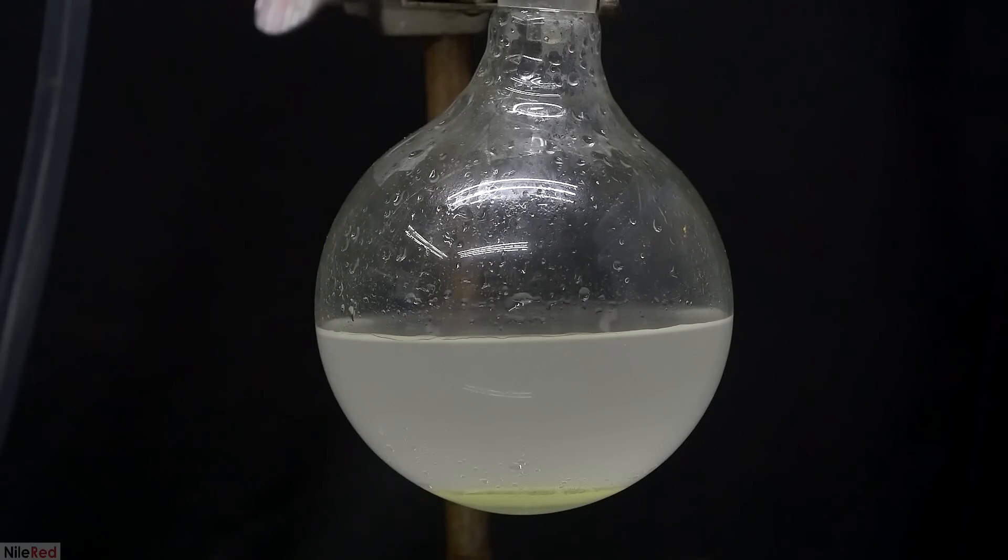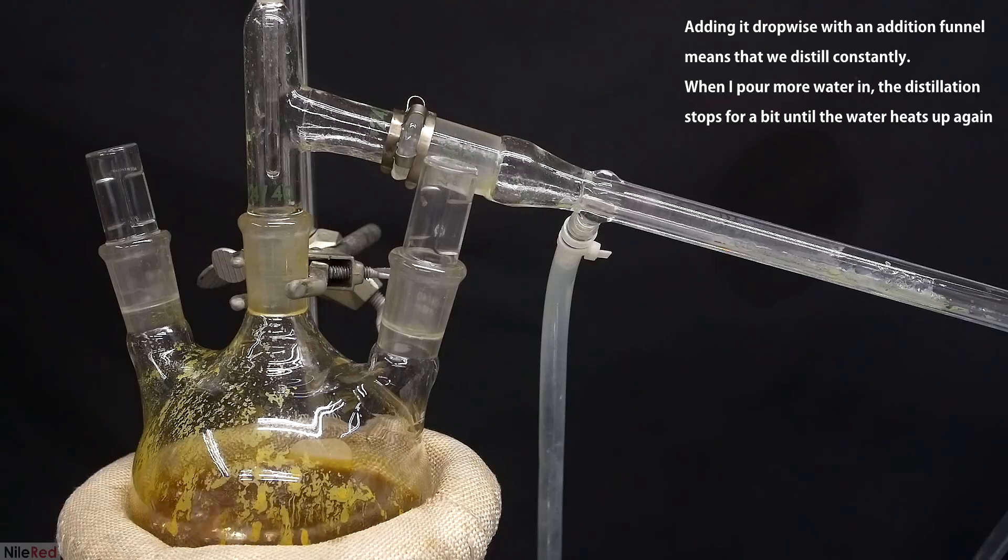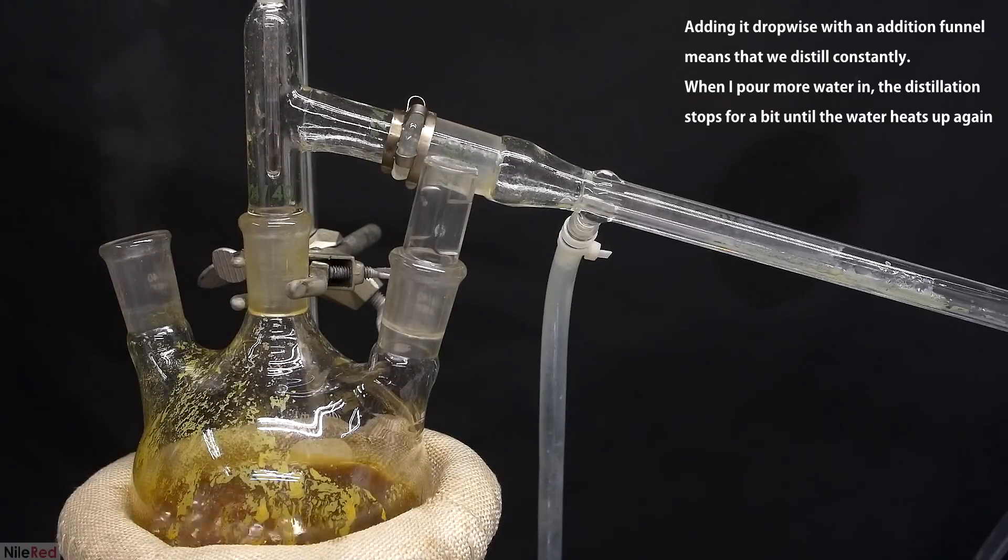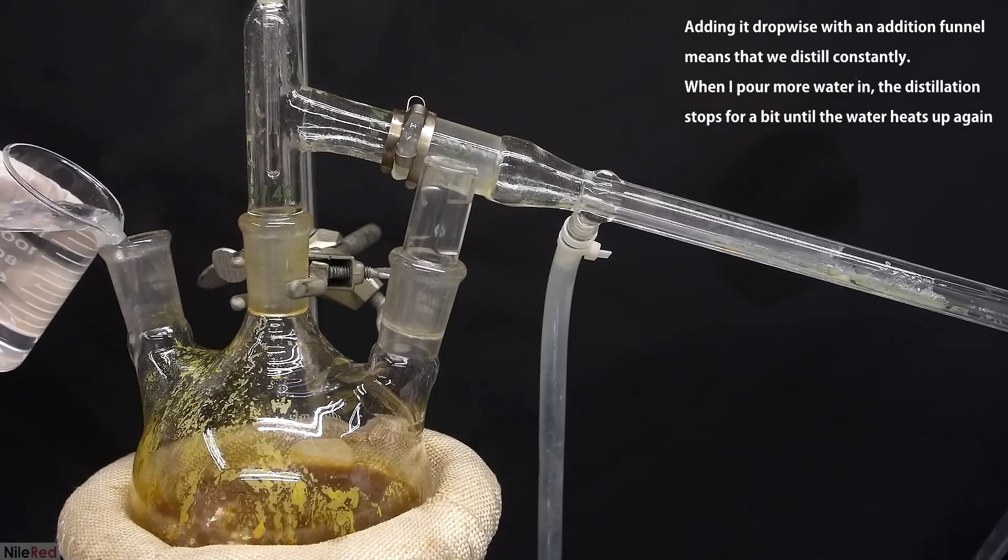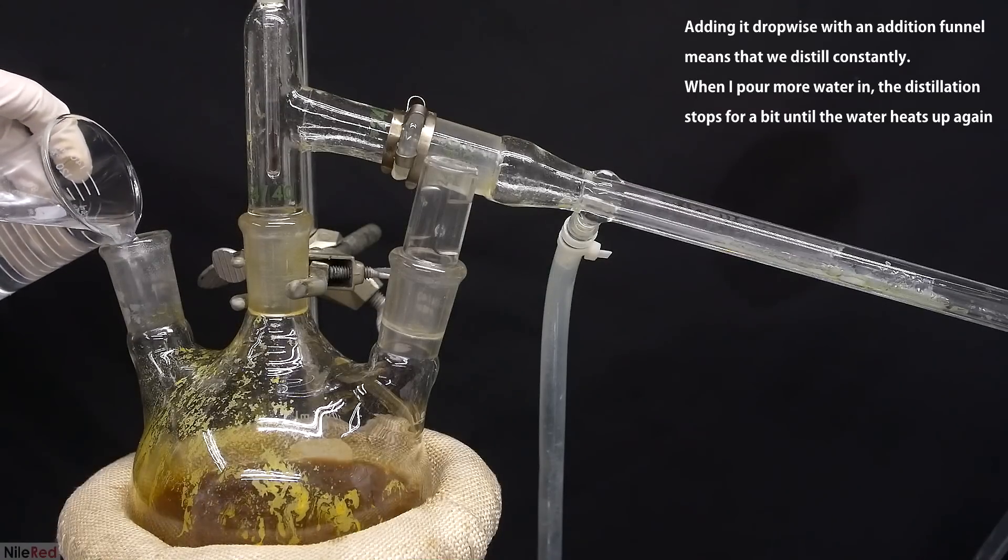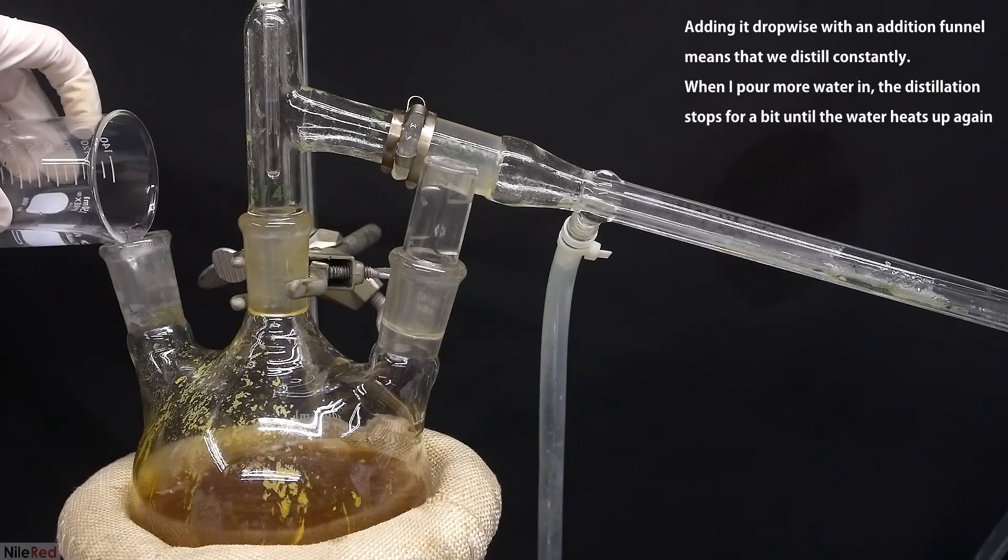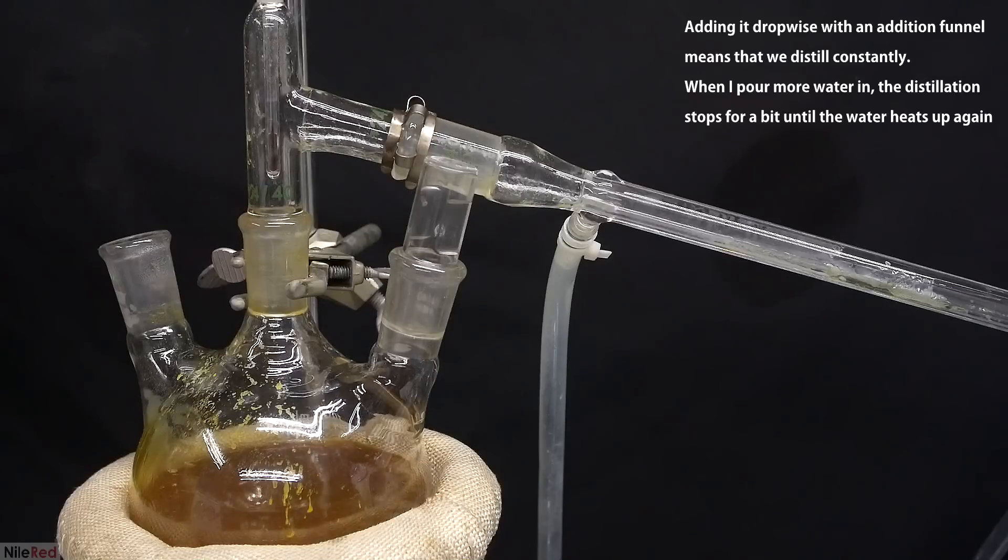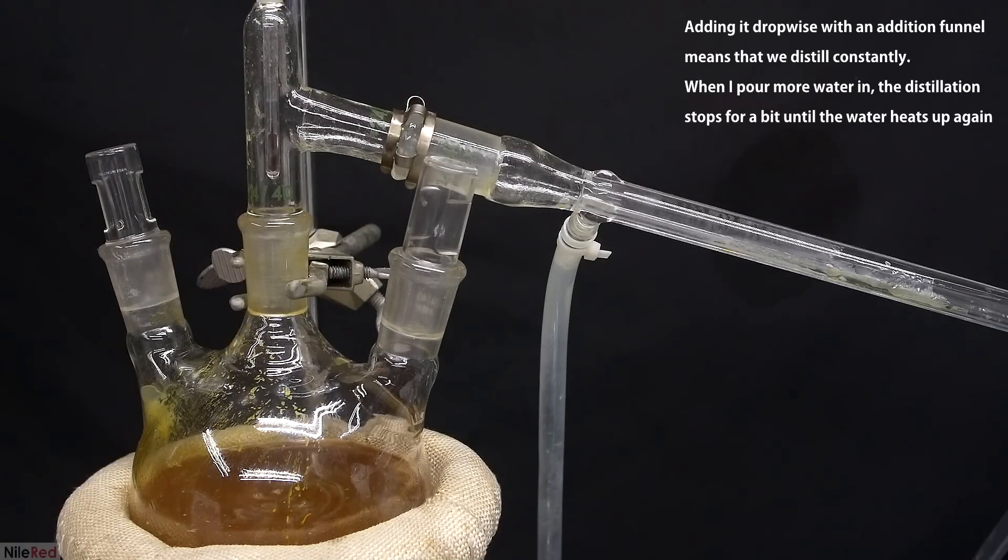After we've collected a little over 100 milliliters, I take a look at the receiving flask and we can see an oil layer at the bottom. As the distillation continues, we're going to have to occasionally replenish the water in the flask. I just poured in a large amount of hot water every so often, but the proper way is to slowly add it using an addition funnel.